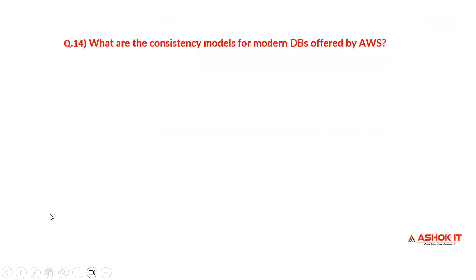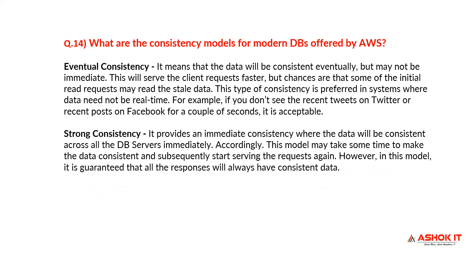What are the consistency models of modern databases offered in AWS? There are two types: eventual consistency and strong consistency. Eventual consistency means that the data will be consistent eventually, but maybe not immediately. This serves client requests faster, but some initial read requests may read stale data. This type of consistency is preferred in systems where data does not need to be real-time — for example, if you don't need the most recent tweets on Twitter or recent posts on Facebook for a couple of seconds, it is acceptable.